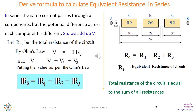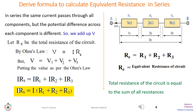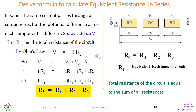Substituting values: V equals I·Rs, V1 equals I·R1, V2 equals I·R2, and V3 equals I·R3. So I·Rs equals I·R1 plus I·R2 plus I·R3. Taking I common, we get I·Rs equals I times (R1 plus R2 plus R3). Cancelling I from both sides, Rs equals R1 plus R2 plus R3. This is the formula for equivalent resistance in series — the total resistance equals the sum of all individual resistances.